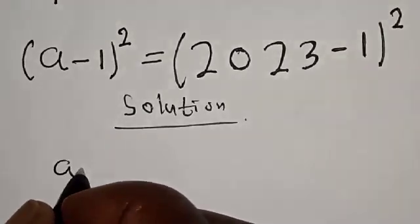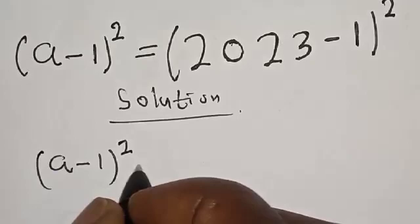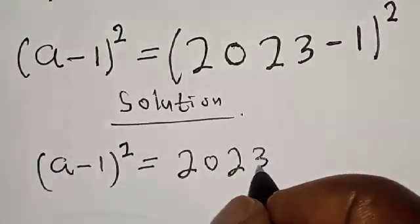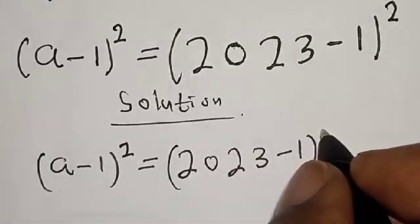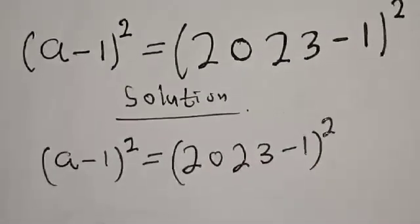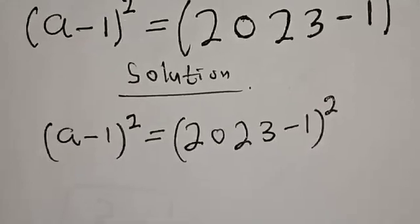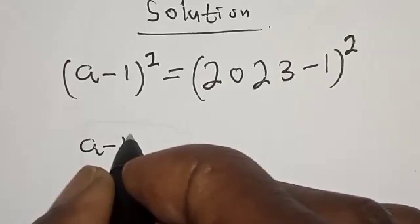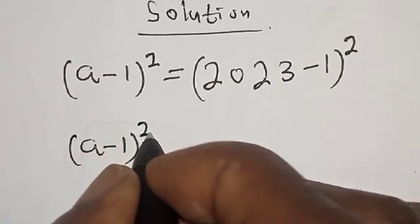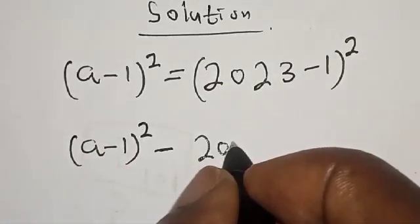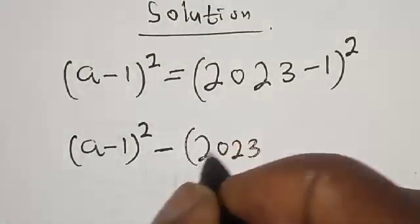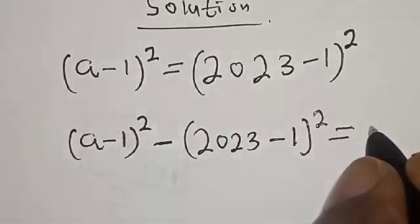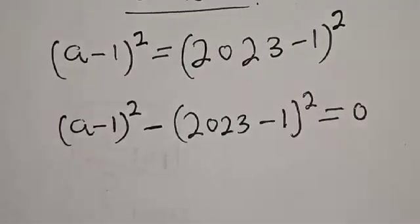(a-1)² = (2023-1)². Now let's bring this to this side. We have (a-1)² - (2023-1)² = 0. Now this is difference of two squares.